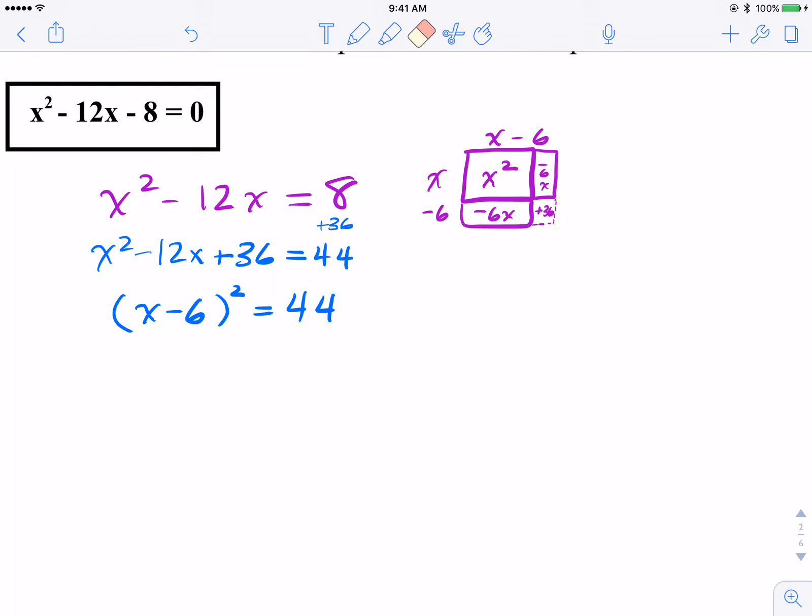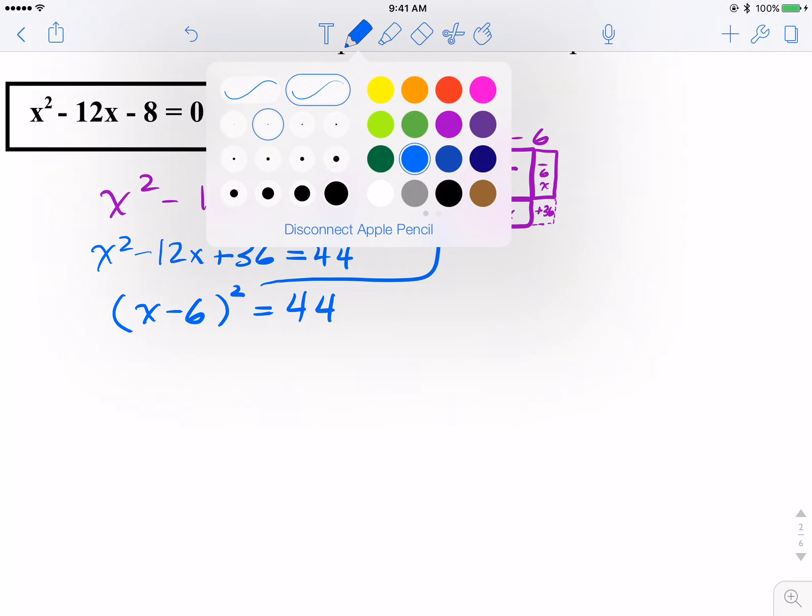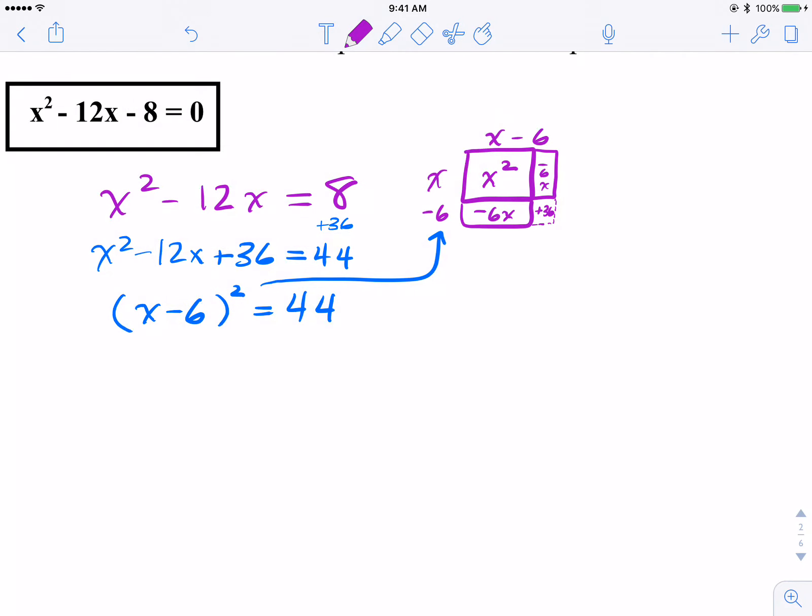And also one of the first things we mentioned here was the fact that, hey, once we have something squared, we can use square roots. So that's what we're going to do at this point. Okay, if I take the square root on the left of something squared, that's simply X minus 6.